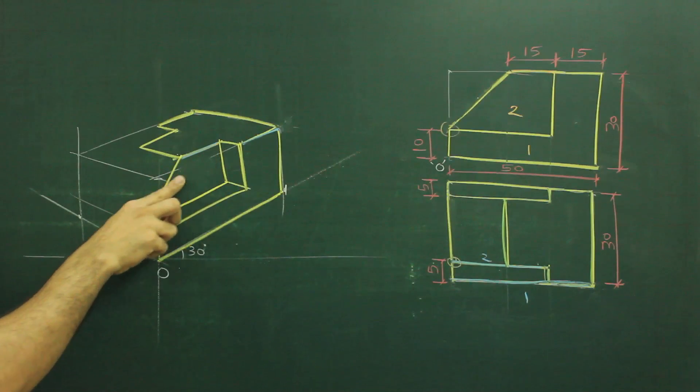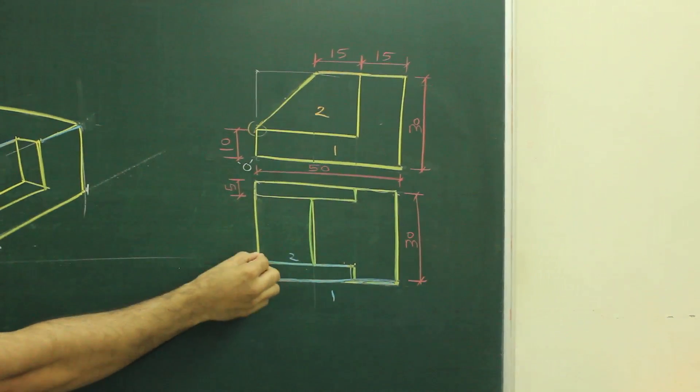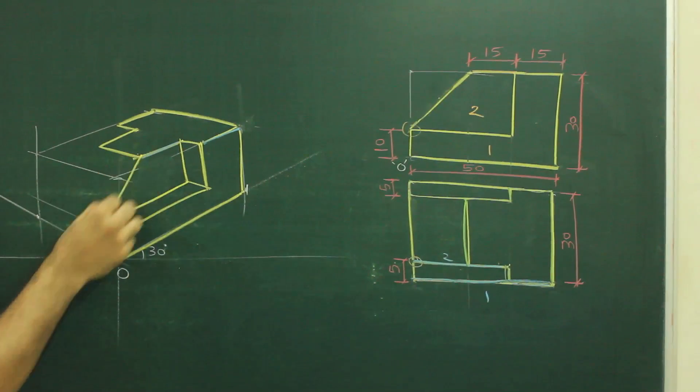Now we got this. Now if you see this part 2, which is here in front view, which is behind by how much? 5. So I took 5 from here, 5 from here, and I have drawn this part 2.